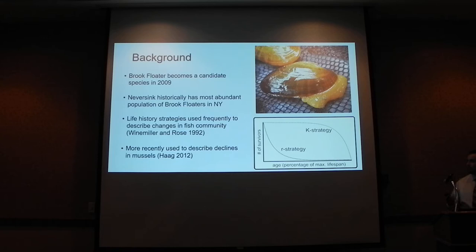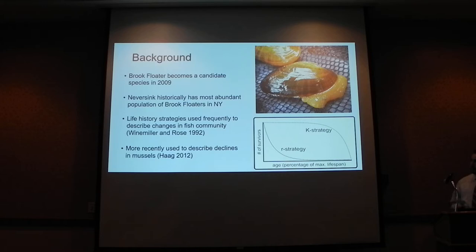In basic ecology terms, these are R-selected organisms versus K-selected organisms — R being short-lived with lots of offspring, and K being long-lived with not so many offspring. This has been described for fishes going back to 1992, but Wendell Hag described these differences in life history strategies for mussels, to not look at them all through the lens of one group using the same strategies, because they don't.